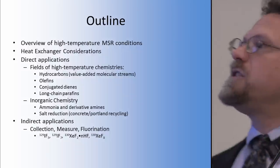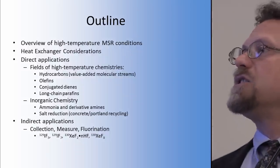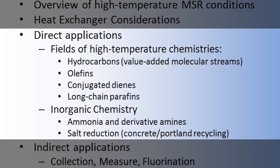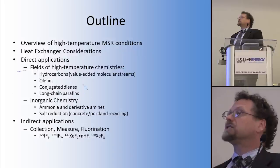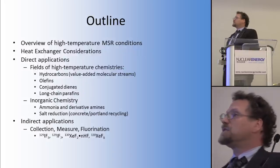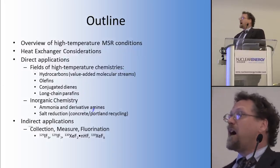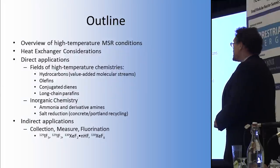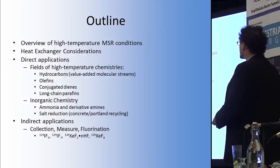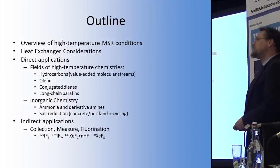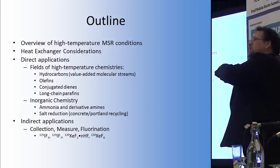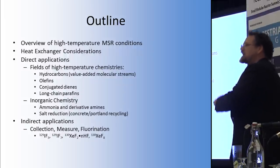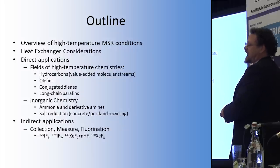A brief overview: I'll cover high-temperature molten salt reactor conditions, heat exchangers, and some direct applications. For those not in the chemistry or engineering community, these will be an eye-opener. Topics include hydrocarbons, olefins, conjugated dienes, long-chain paraffins, and inorganic chemistry — specifically ammonia. I'll also touch on salt reduction, a recent project I took on, and then some indirect applications which are indirect to industry but direct to molten salt reactors in particular.